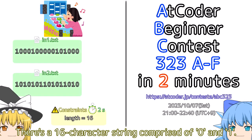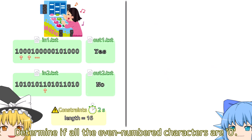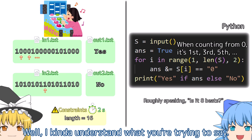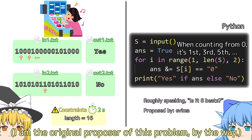Problem A. There's a 16-character string comprised of 0 and 1. Determine if all the even-numbered characters are 0. I kinda understand what you're trying to say. I am the original proposer of this problem, by the way.